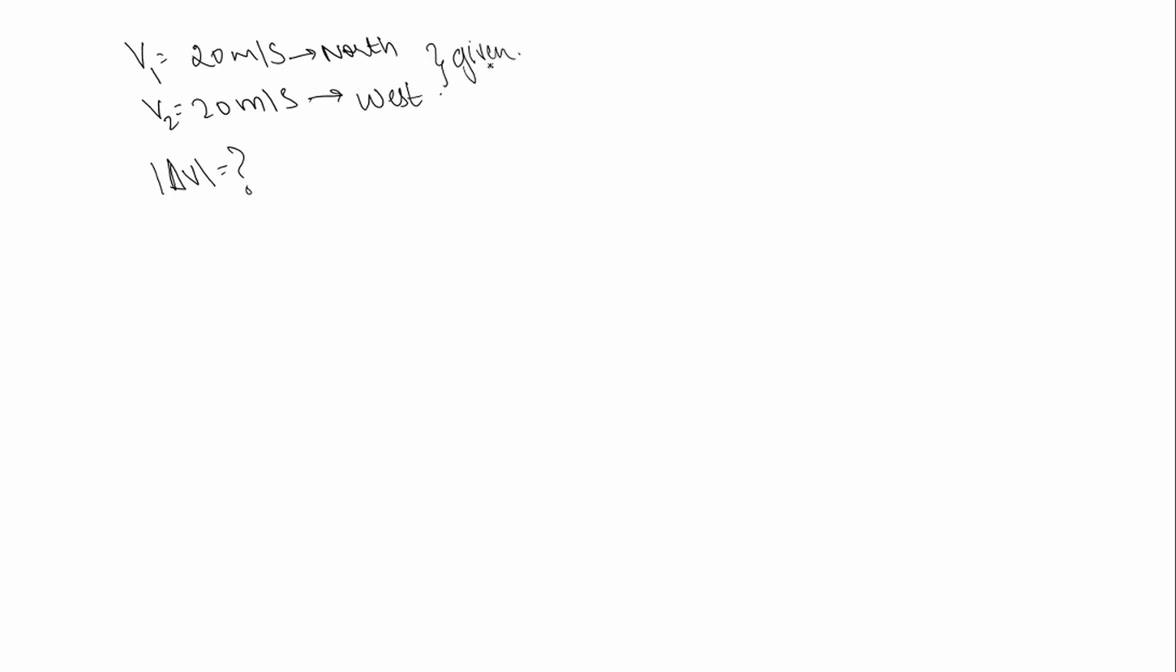This is given and we need to find this. Change in velocity is v2 minus v1. The magnitude of change in velocity will be the square root of v2 square plus v1 square.